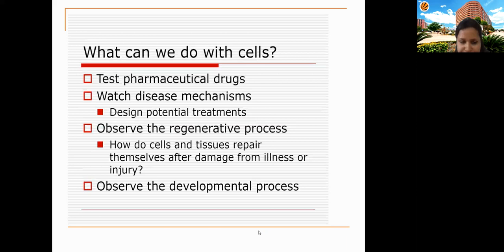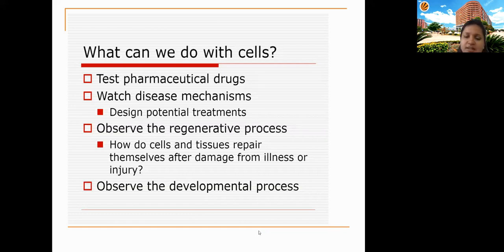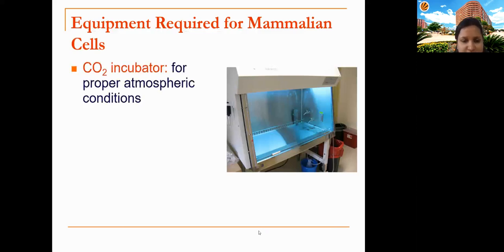Cell culture is also much cheaper. We can test pharmaceutical drugs, observe disease mechanisms, and study regenerative processes — for example, watching wound healing to see how cells repair themselves and how their movement is affected by certain drugs. We can also evaluate developmental processes and even induce differentiation of cells in culture conditions.